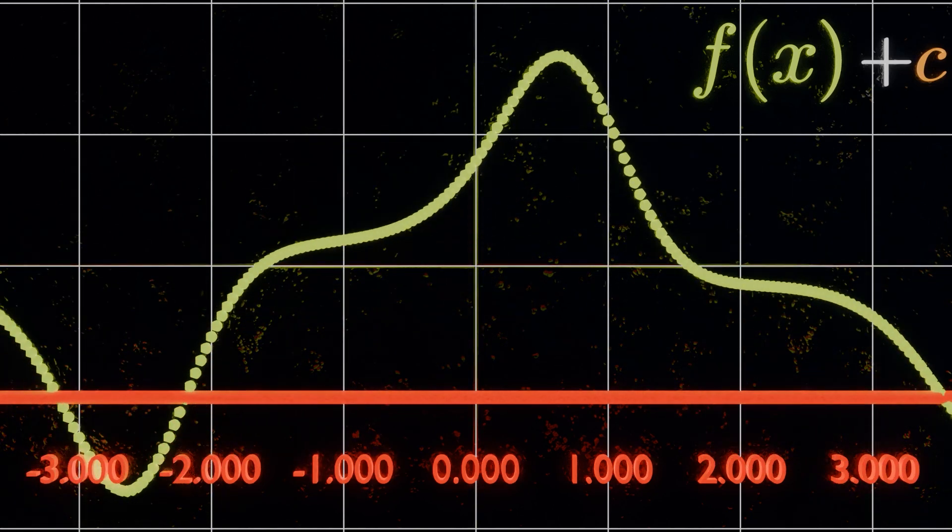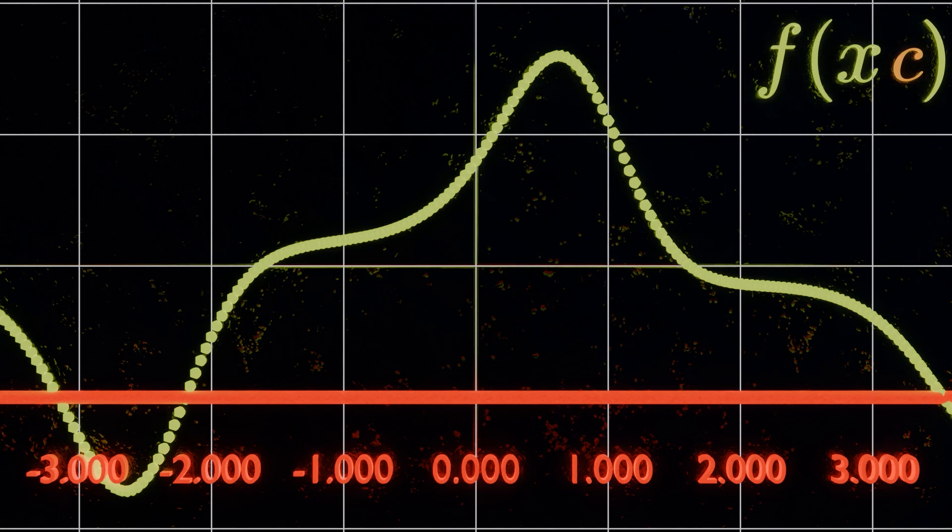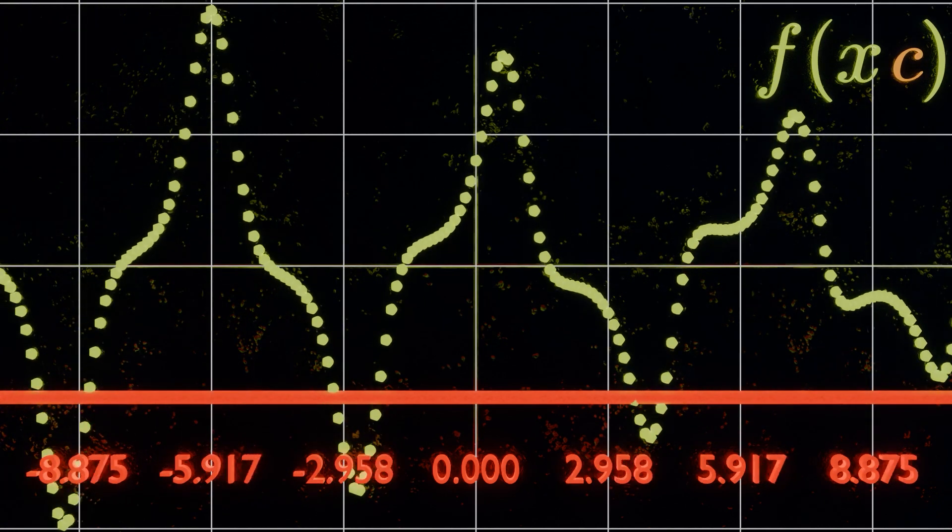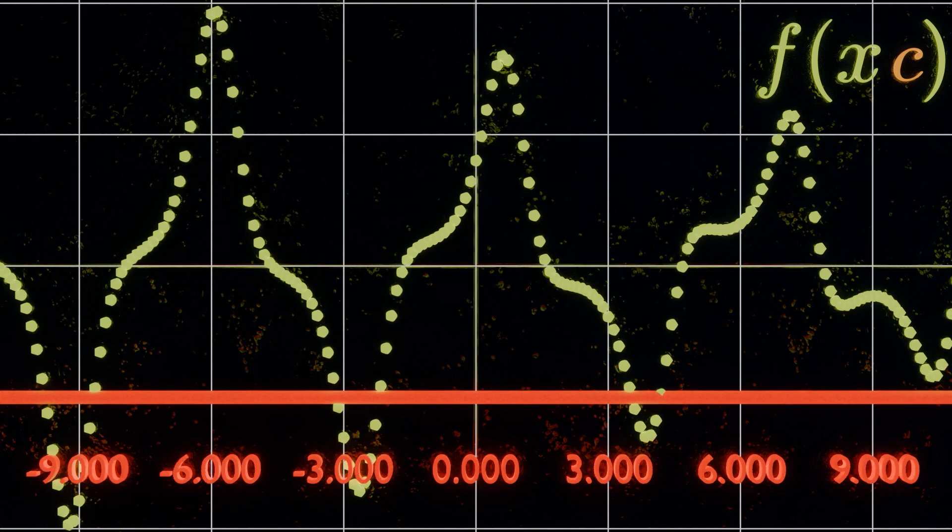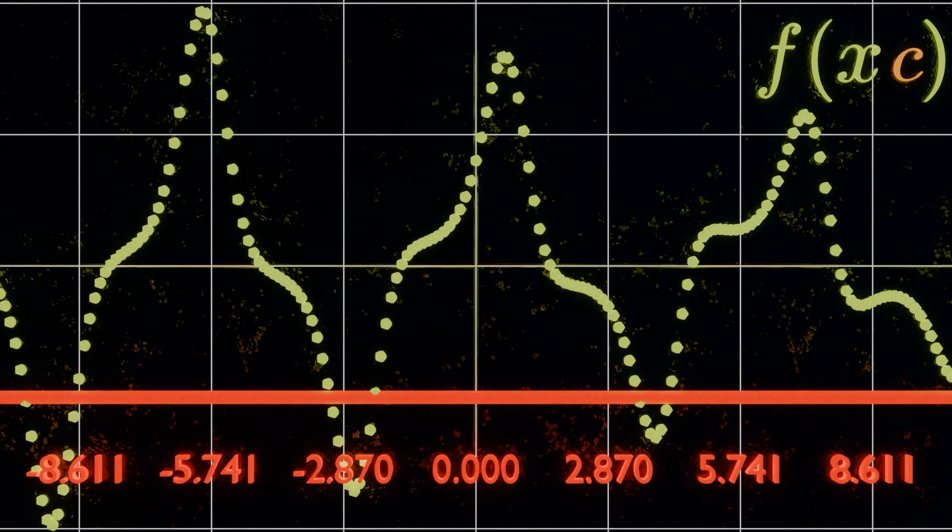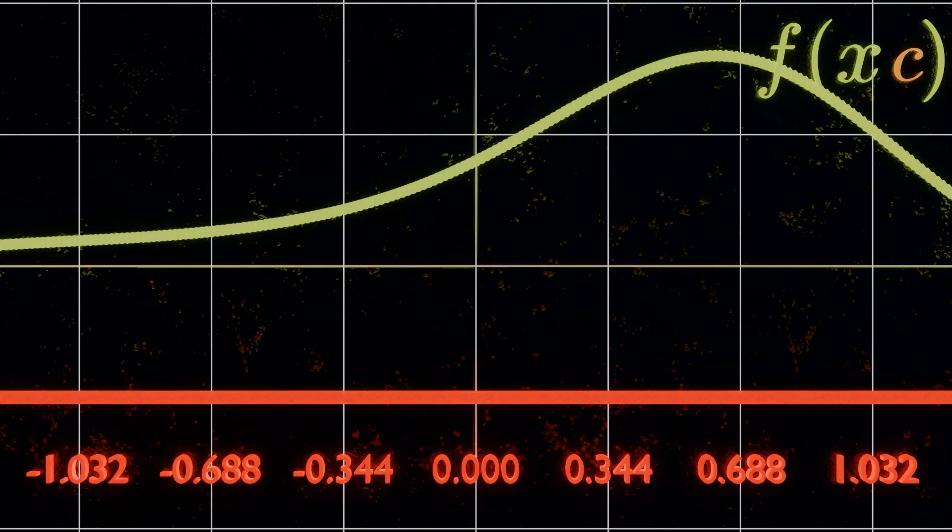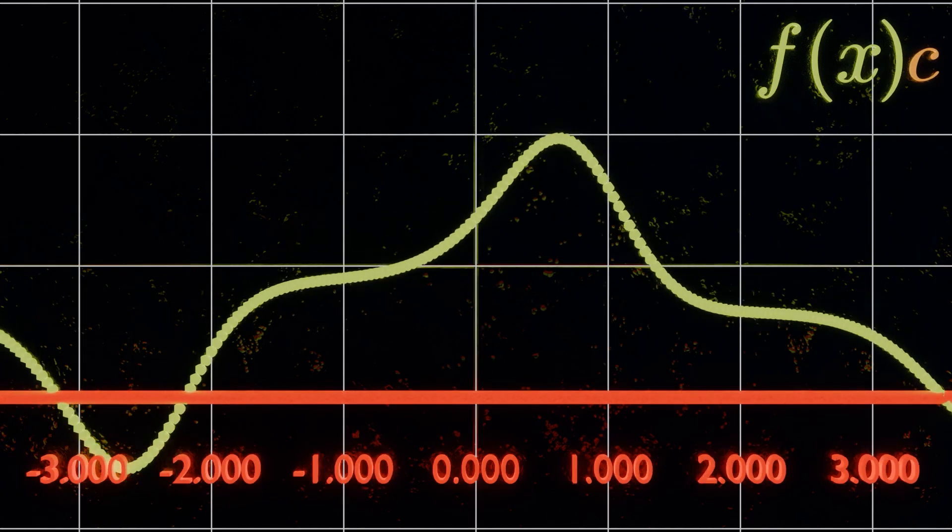And then last, let's multiply the x by c. Now if we set it to 3, you can see that the logic is similar to addition, except this time we're moving it in both directions at the same time, otherwise known as stretching it. If we decrease c to a much lower number, then we shrink it, and once again, we multiply the entire function, we get something like this.